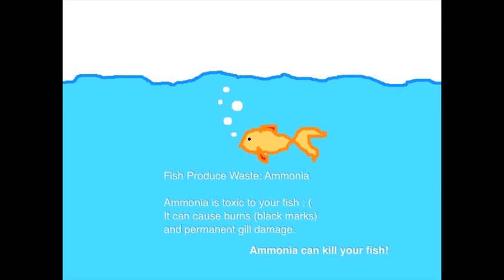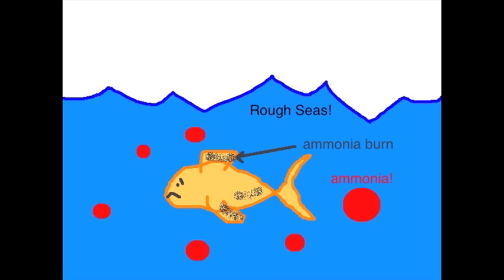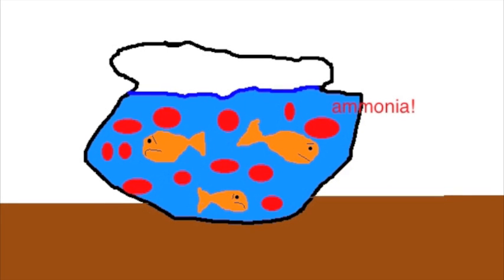Tonight's video is a brief overview of the nitrogen cycle, or the cycle of the tank. Your cycle is basically what keeps your water safe and free of dangerous toxins between your water changes. The first part of the cycle is the waste that fish produce, which comes in the form of ammonia. Uneaten food and decaying plant matter also contribute to ammonia. Ammonia is very dangerous — it can cause external burns seen as black marks on the fish, permanent gill damage, and eventually death. Ammonia can build up very fast in small, overcrowded, or unfiltered tanks.